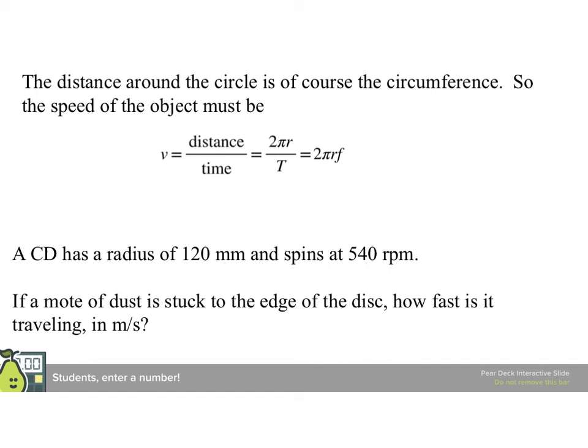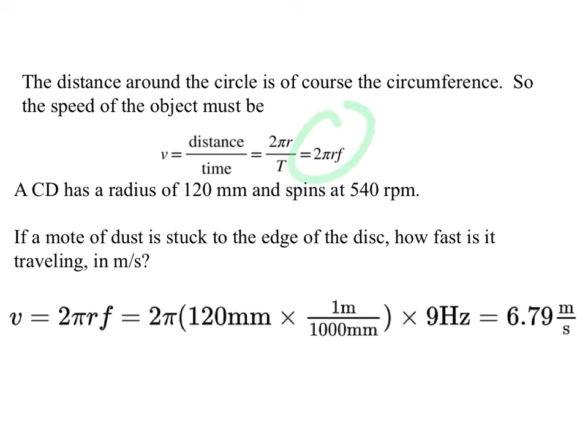So, for instance, returning to our CD with a radius of 120 millimeters and spinning at 540 RPM, if there's a mote of dust stuck to the edge of the disk, how fast is it traveling in meters per second?